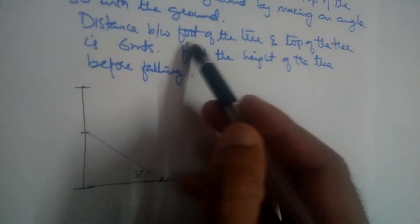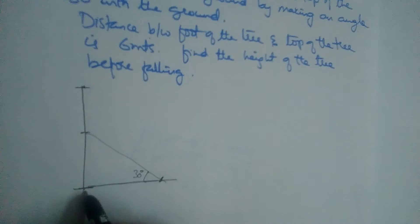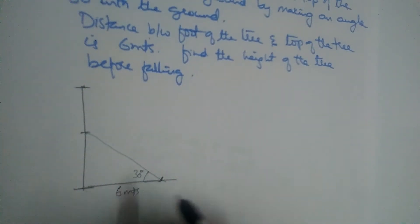And distance between the foot of the tree and top of the tree is 6 meters. So the distance between these two points is 6 meters. We should find the original height of the tree.